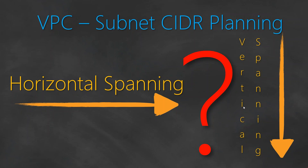Hello folks, today we are going to discuss another real-life scenario of planning your VPC CIDRs. There are two different ways of doing it: one is horizontal spanning and another one is vertical spanning. Let us go ahead and see what the two options are and which one you should choose.